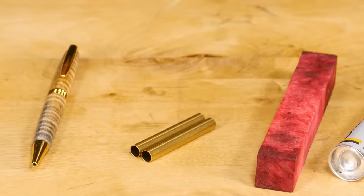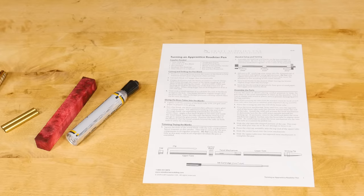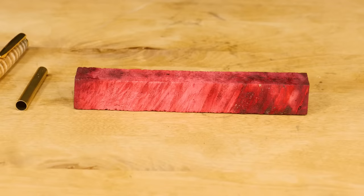Now grab the brass tubes that came with your pen kit and check their length. Some pens use brass tubes with different lengths for the top and bottom of the pen. With this pen both tubes are identical so it doesn't matter which is the top or bottom. If you are unsure check the instructions that came with the kit.